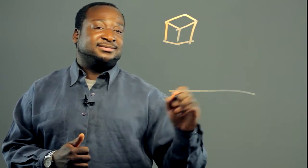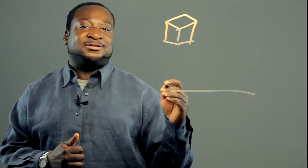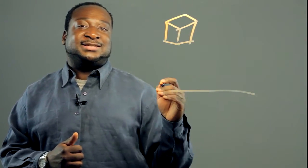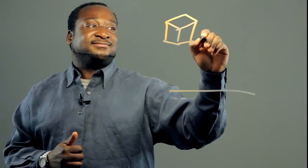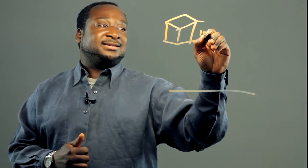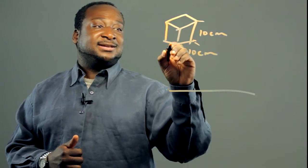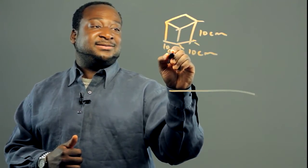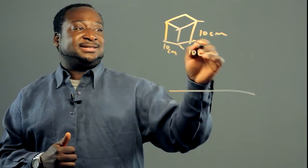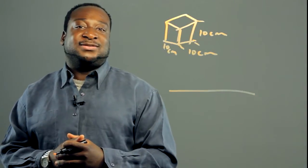Whereas meters, that's a one-dimensional measurement. And the way this conversion might get mistaken is because one liter is equivalent to 10 centimeters by 10 centimeters by 10 centimeters. That is this box — a 10 centimeter cube box is the equivalent of one liter.